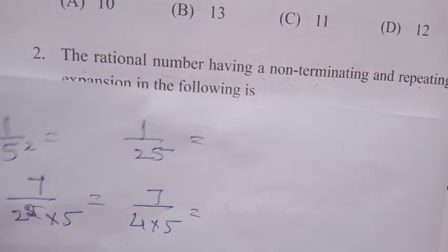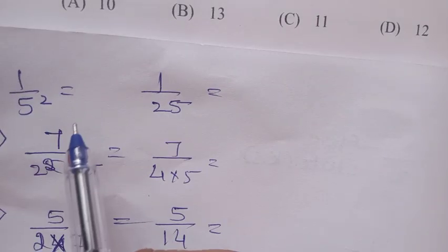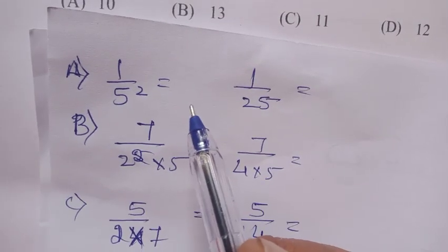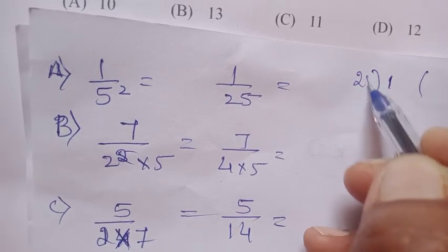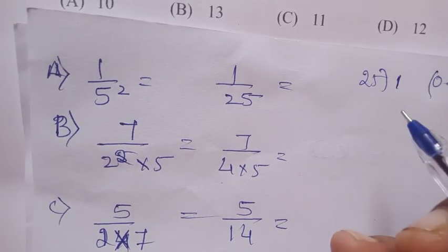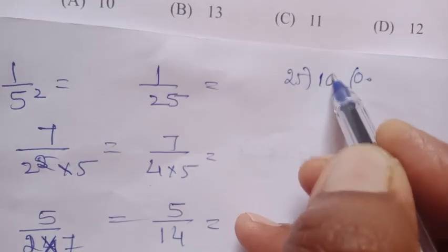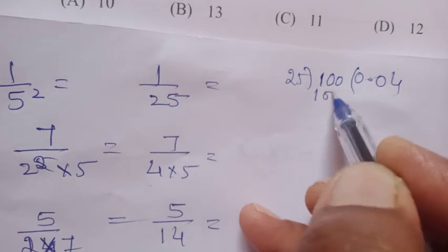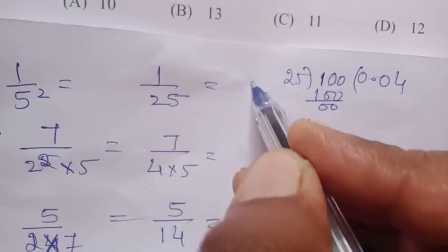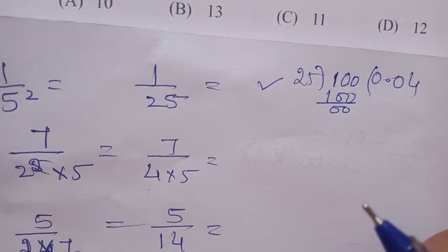First option: 1 upon 5 squared. 5 squared is 25, so it's 1 upon 25. Now divide 1 by 25. It's 0 point... As 1 is smaller, this is 0. Put a 0 here, then 25 into 100, the remainder becomes 0. That means it's a terminating decimal expansion. There's no question - this one becomes 0.